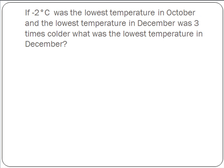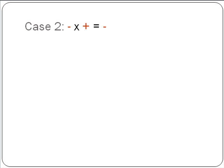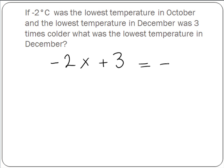We'll take another example for our second case. If minus 2 degrees Celsius was the lowest temperature in October and the lowest temperature in December was 3 times colder, what was the lowest temperature in December? So we're multiplying by plus 3. This time we have a minus multiplied by a plus, so our answer is going to be a minus. And 2 by 3 will give us 6, so we've got minus 6 degrees Celsius.